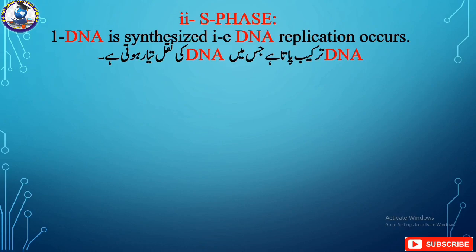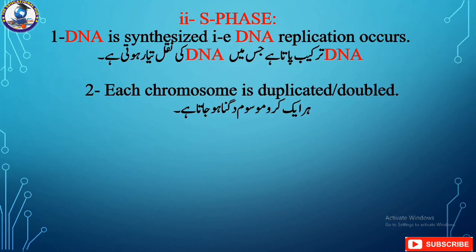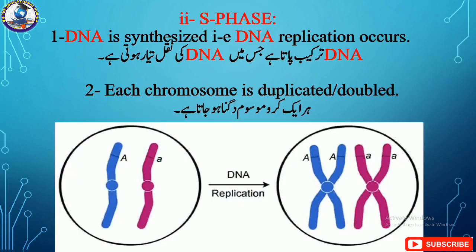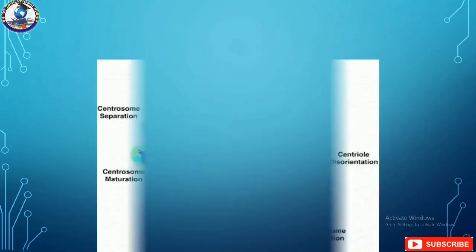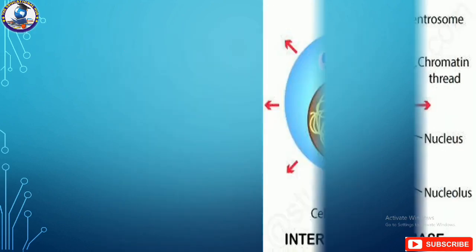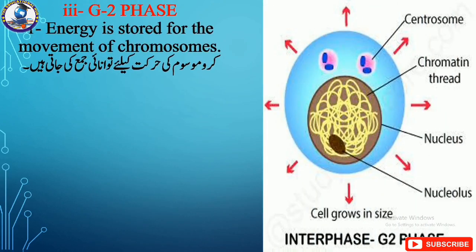The second sub-stage of interphase is S phase. In S phase, DNA is synthesized — that is, DNA replication occurs. Each chromosome is duplicated. Centrosomes, which are usually absent in plant cells, will also be duplicated during the S phase in animal cells.